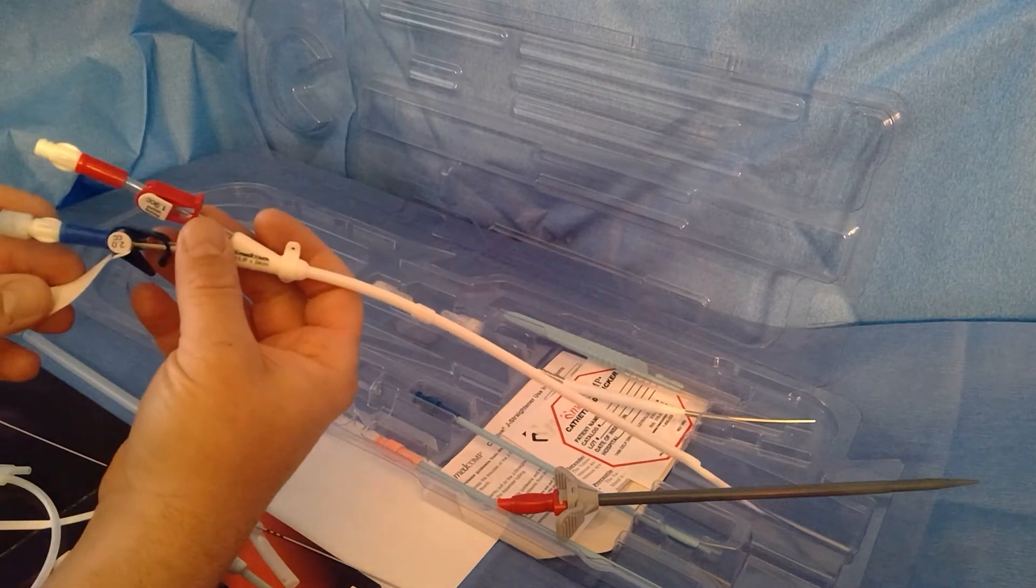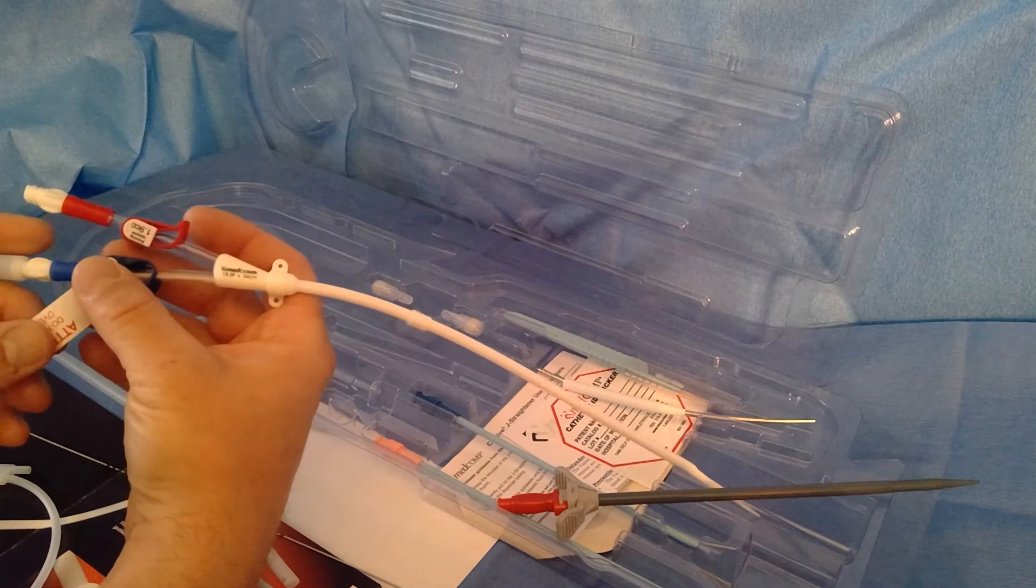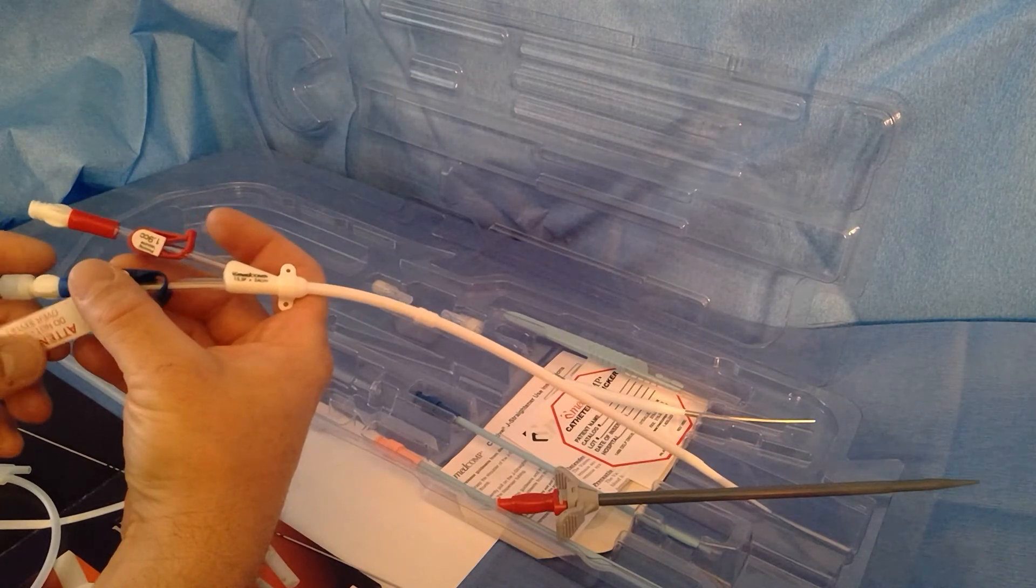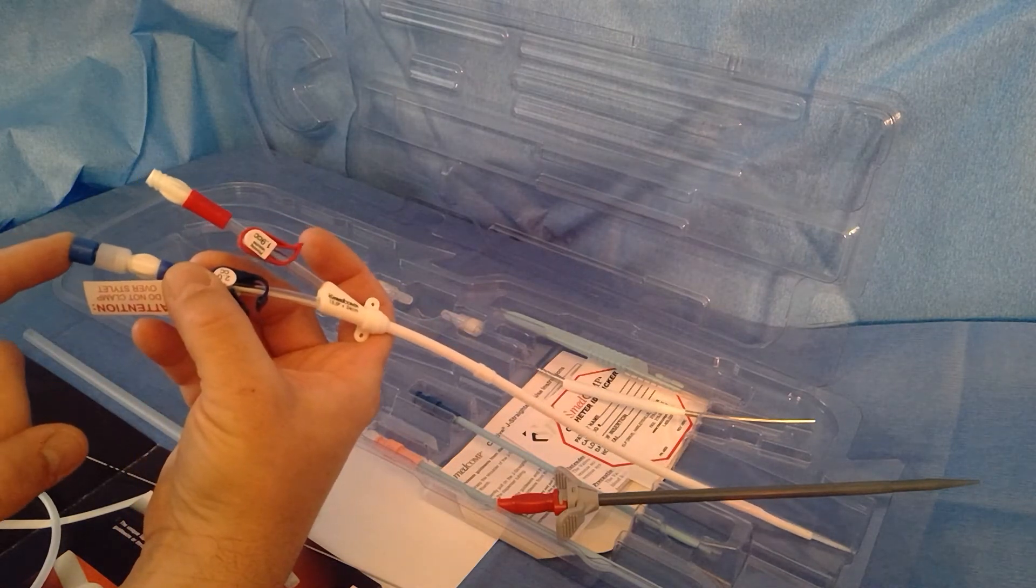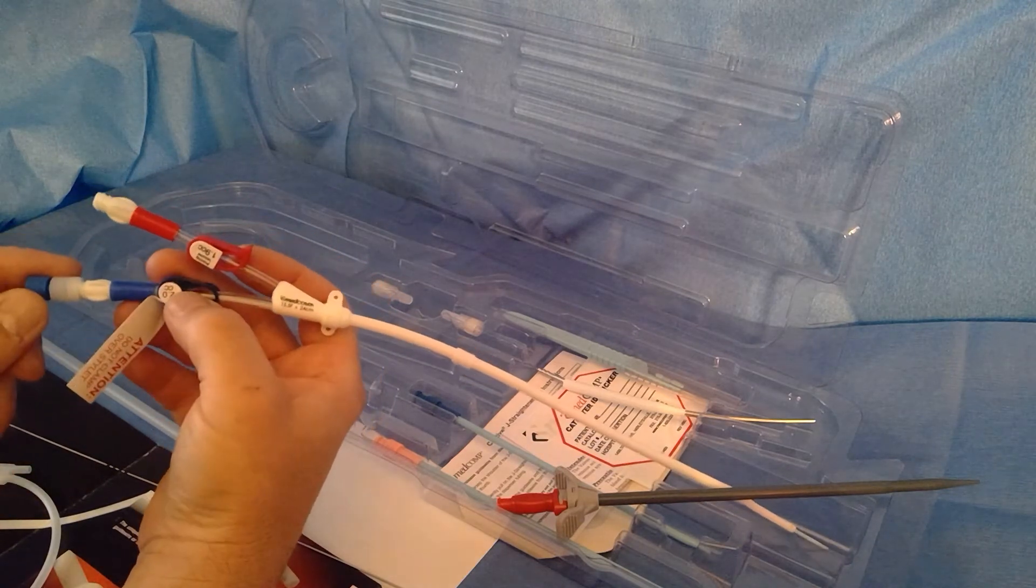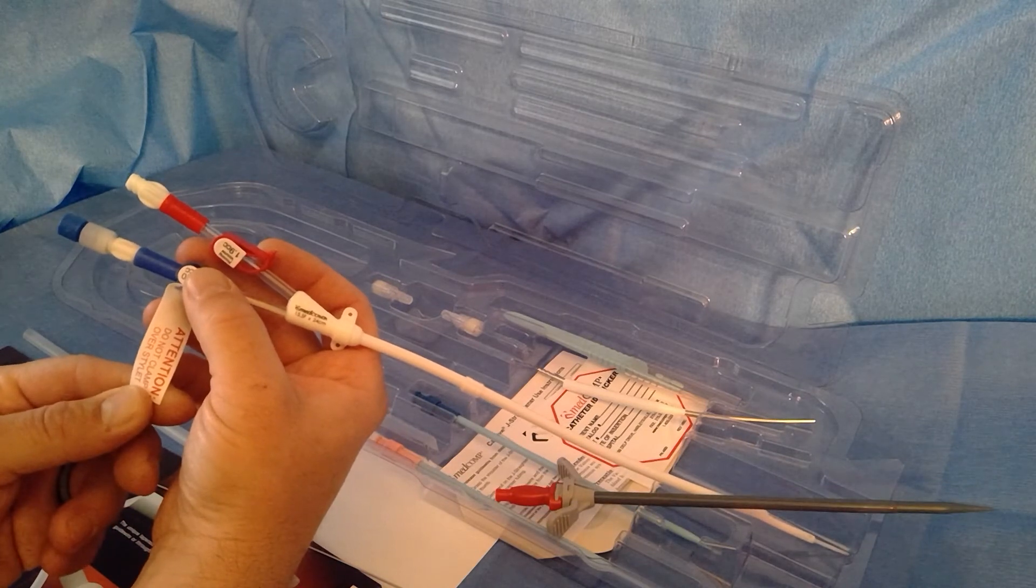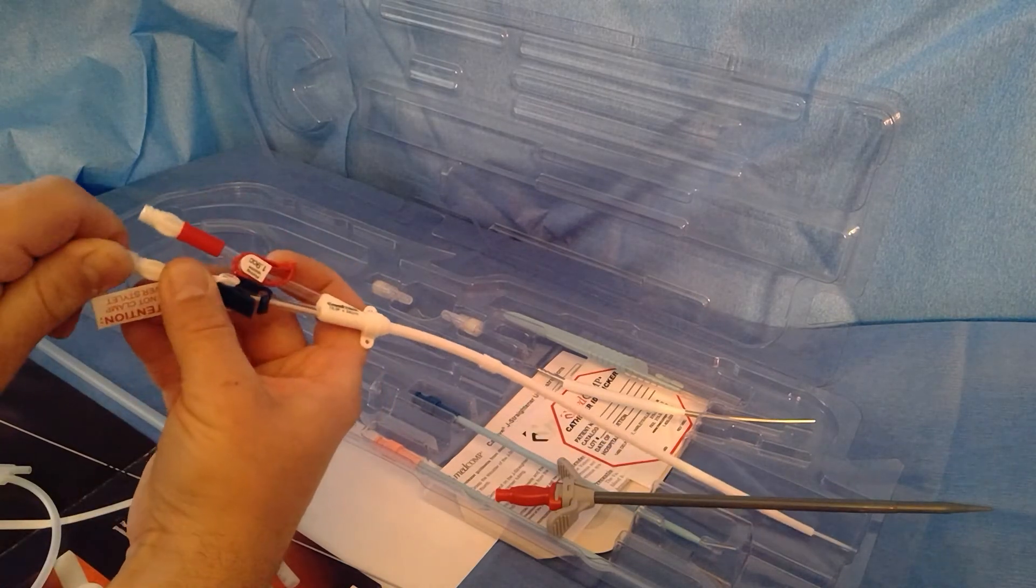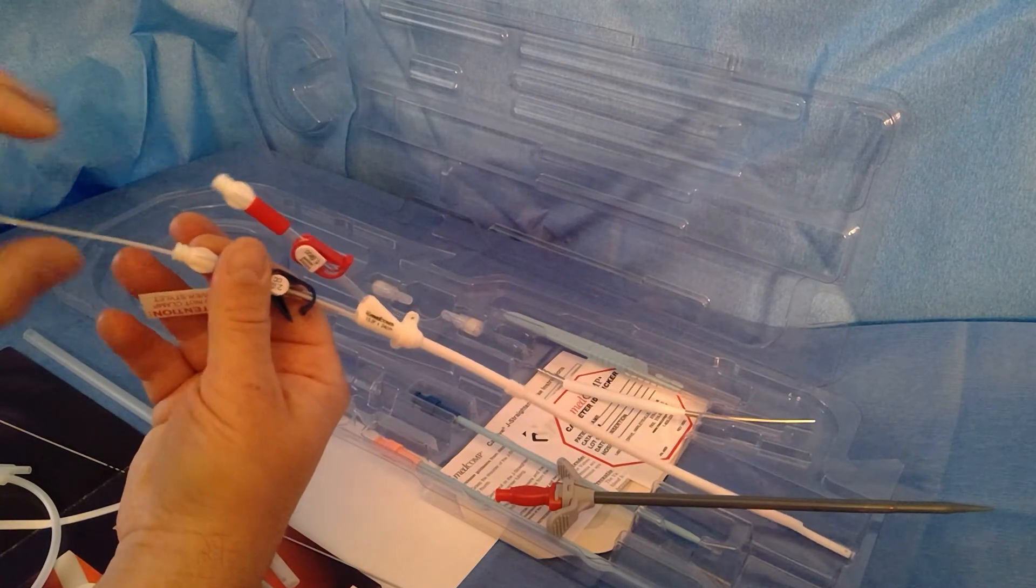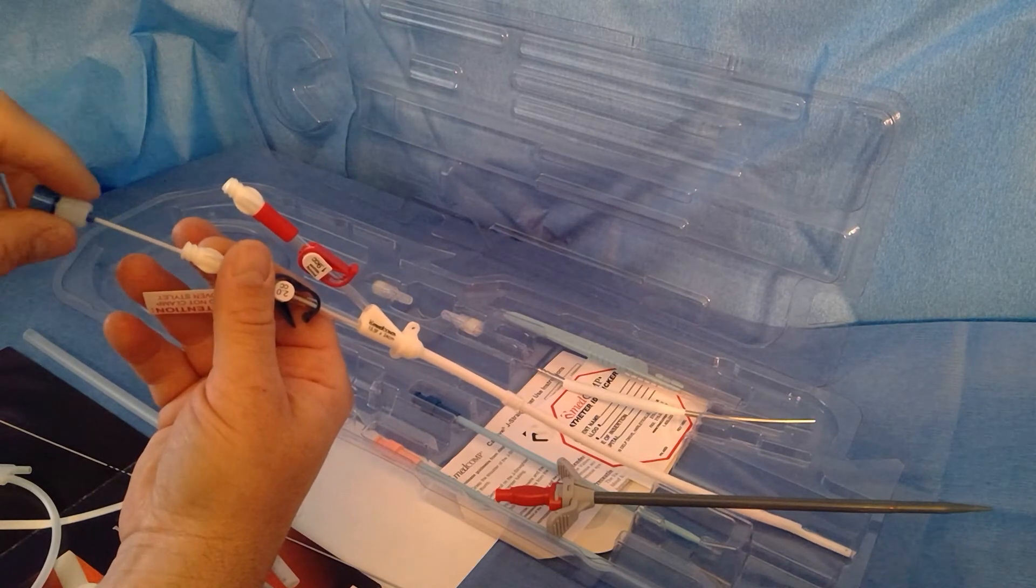The catheter has your usual red and blue lumens with the priming volumes on the clamps. One thing unique to this Titan, as well as some of our other Medcomp catheters, is it comes with a stiffening stylet or a fast track stylet that helps aid in exchanges. On this catheter it's through the blue lumen. It has a little label here that says do not clamp over the stylet. The reason being is this clear plastic stylet can be kinked with this clamp, and if it gets kinked then it'll be harder to get the wire through during the exchange.